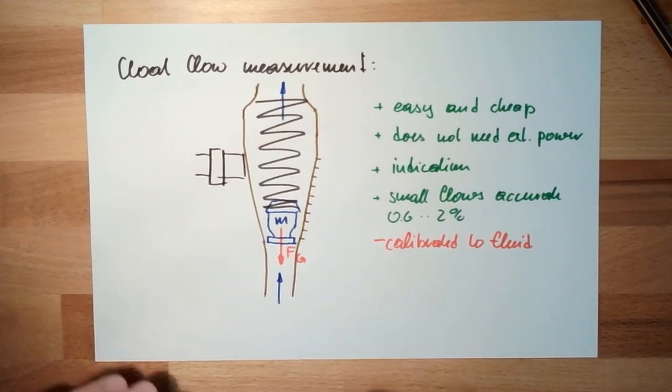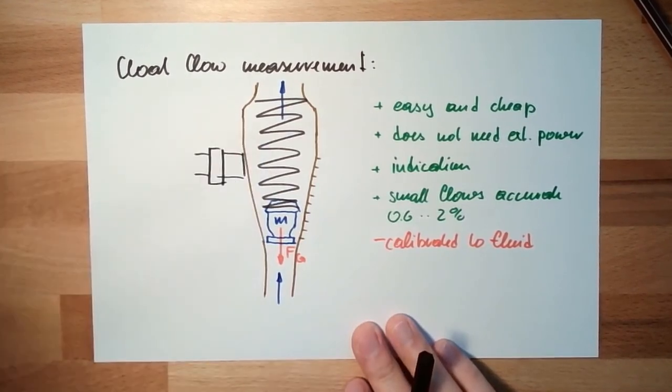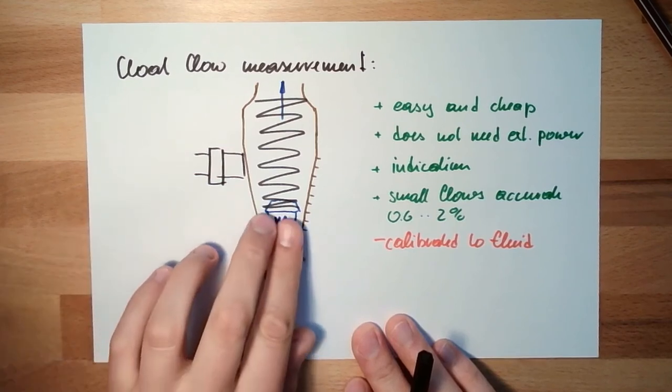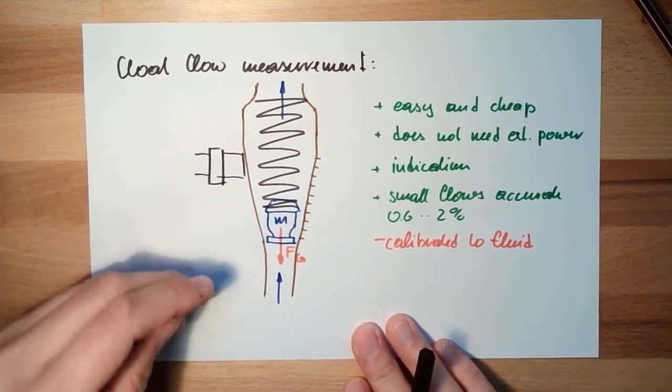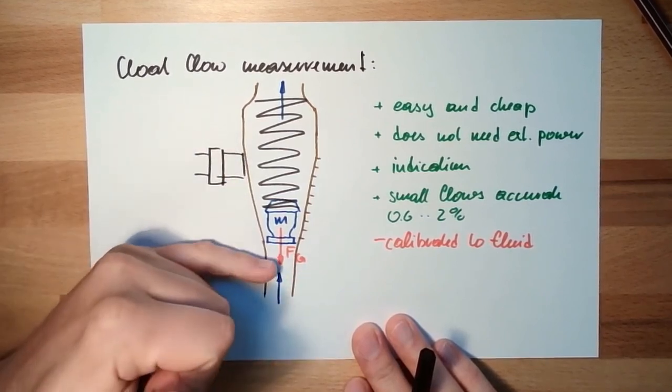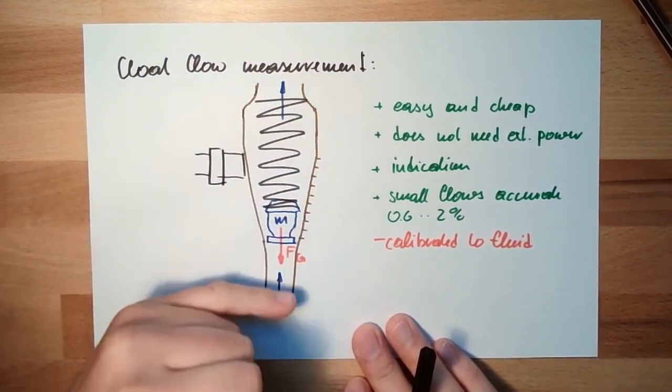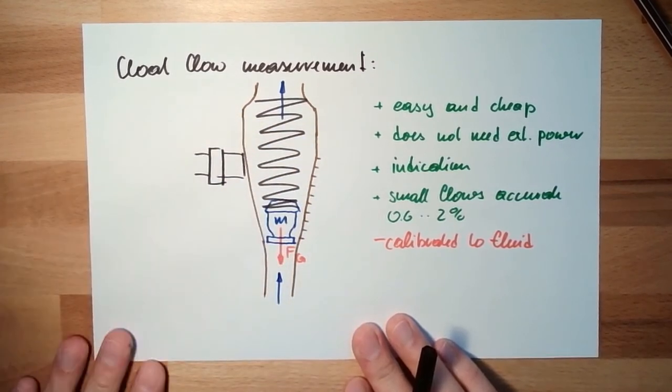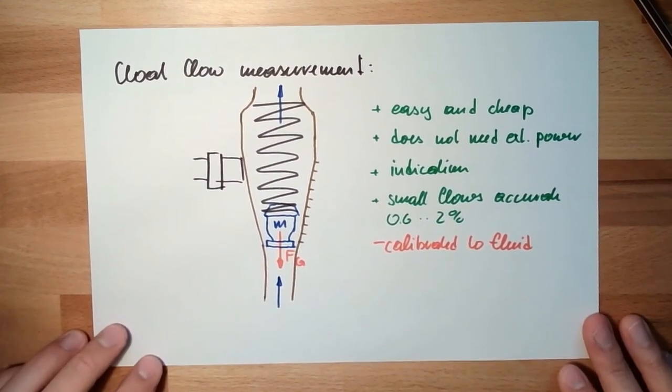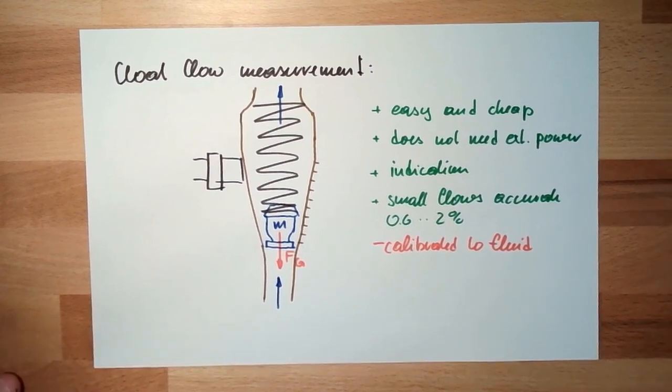It's also possible to have a switch - inductive switch, capacitive switch. When the float passes, the switch is activated to watch if there is enough cooling water running through. If the float goes down, the switch will indicate there's not enough cooling liquid flow.